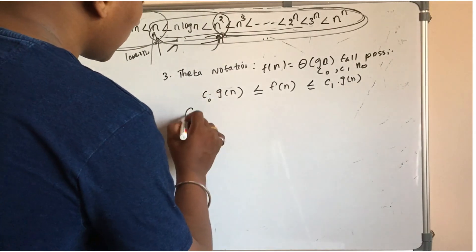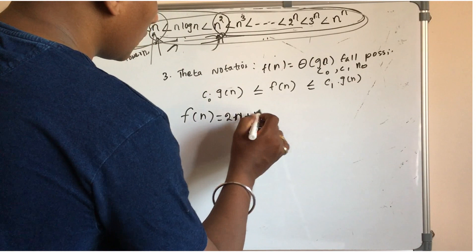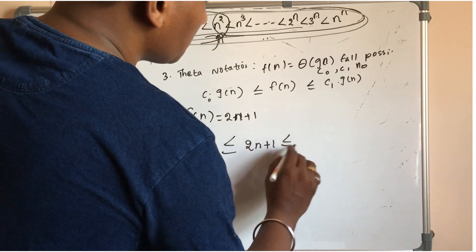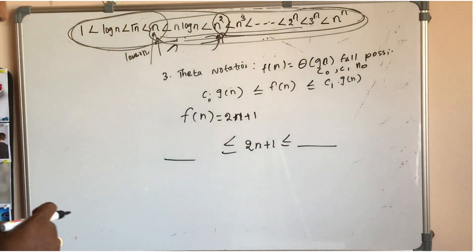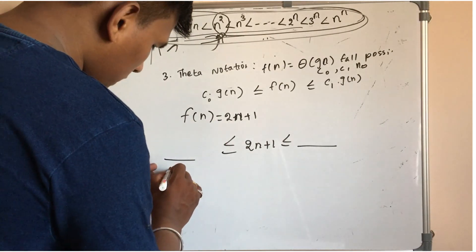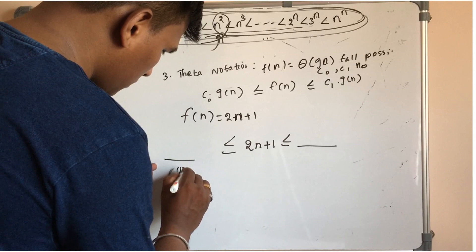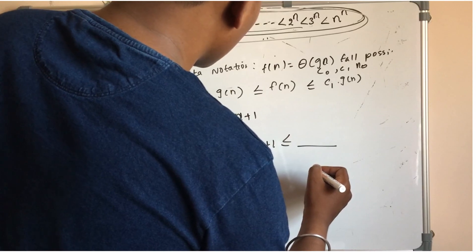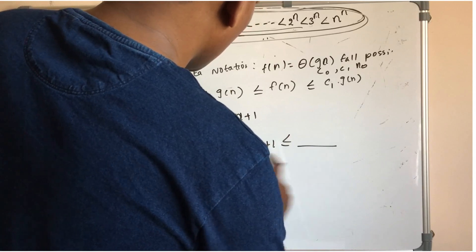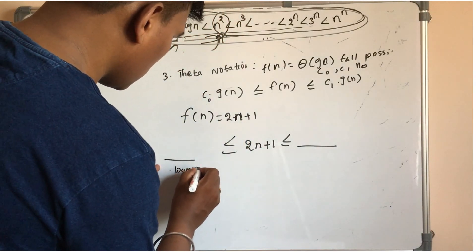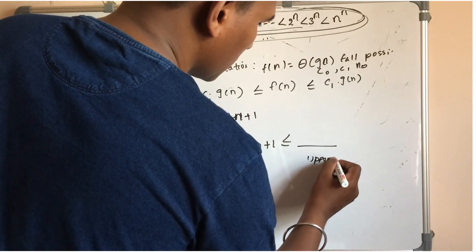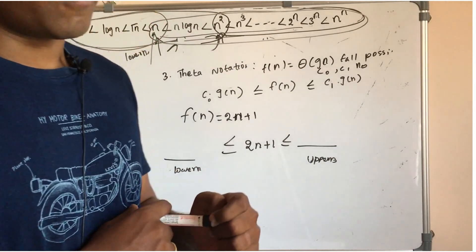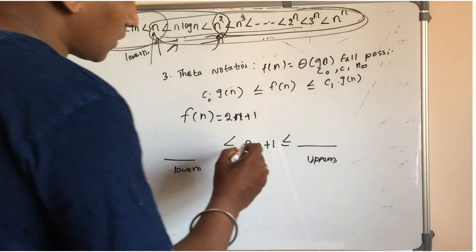So f(n) is equal to 2n plus 1. Now f(n) is equal to 2n plus 1 — you can calculate this. This is the big O notation — upper bound. This is the bigger notation — upper bound. This is the upper bound and lower bound.